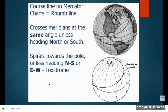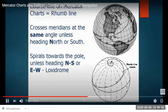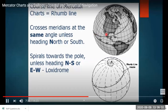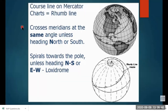How will a course line look on a Mercator chart? The course line drawn on a Mercator chart is called a rhumb line. It crosses each meridian at the same angle unless heading north-south. On the globe, a rhumb line spirals towards the pole if maintained at the same angle. If you draw the same line on the Mercator chart, it appears as a straight line.